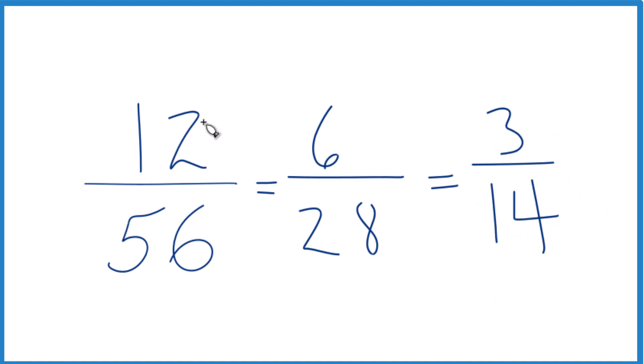If you knew that 4 went into 12 and 56 evenly, you could skip this step here, go right to 3 and 14. 4 is the greatest common factor.